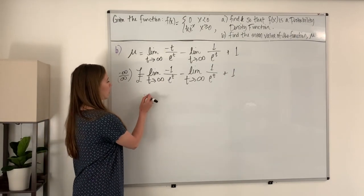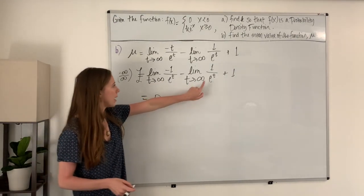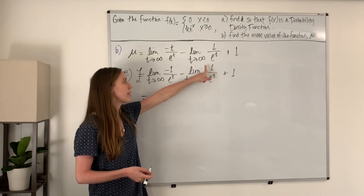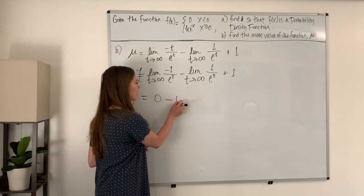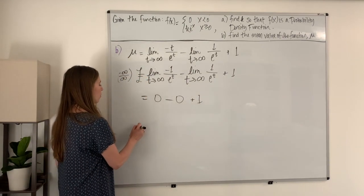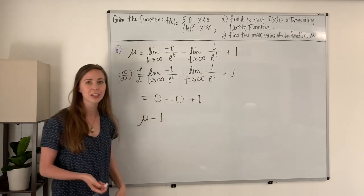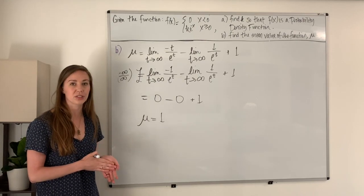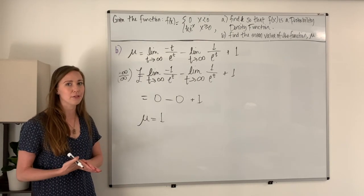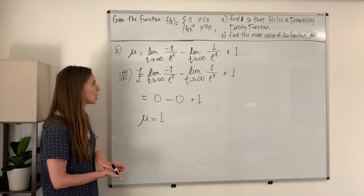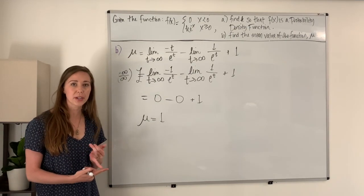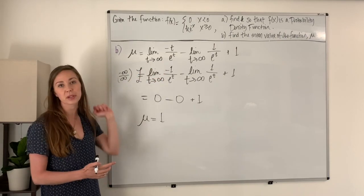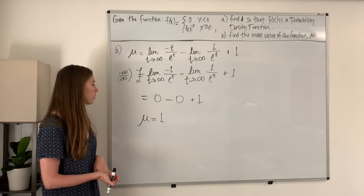So we have zero minus zero plus one, and mu, our mean value of the function, is just one. We went through a lot of work to arrive at a rather simple answer, but this is a good review of several calculus concepts: we used improper integrals and limits, integration by parts, and L'Hopital's rule to resolve an indeterminate form.